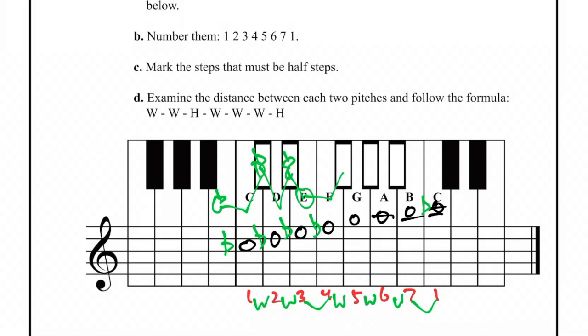F-flat, a whole step, is G-flat. G-flat, a whole step, is A-flat. I forgot the flats in front of G and in front of A. Okay, A-flat to B-flat is a whole step. Place a flat in front of B.